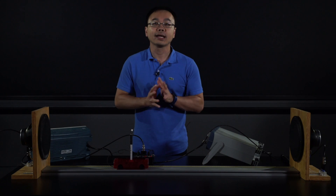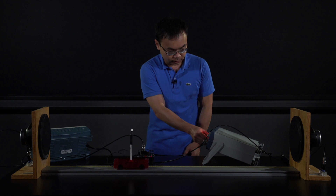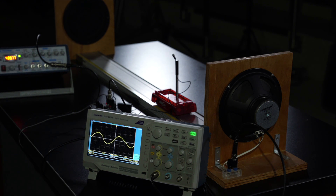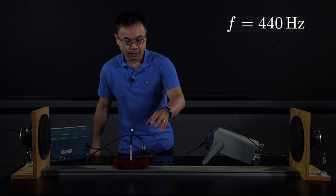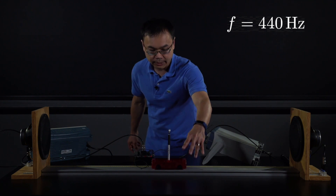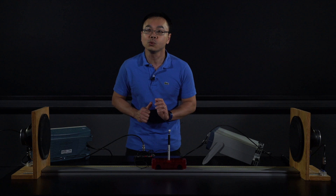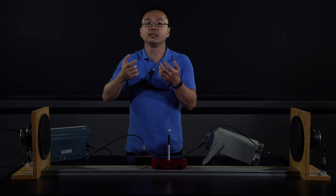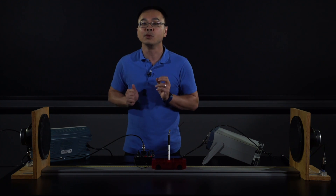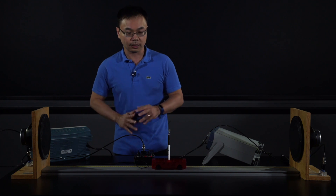Now I'm going to change the angular frequency of the function generator by a factor of 2. If I reduce the angular frequency by a factor of 2 to approximately 40 hertz, the wavelength has to increase by a factor of 2 to compensate. Therefore, you should see fewer nodes on this track.